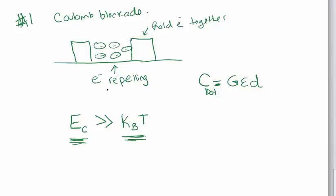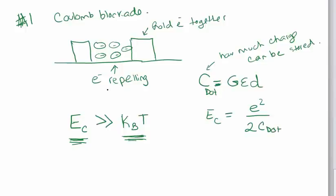So the capacitance of the dot is this geometrical term times the material permittivity times the diameter of the dot. So this is how much charge the quantum dot can store. How much charge can be stored in the dot. So from that, then we can talk about the energy required to add an additional charge. So EC is equal to the charge of an electron squared. E is a charge on an electron. Divided by twice the capacitance, C dot.